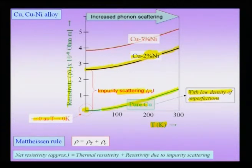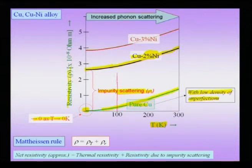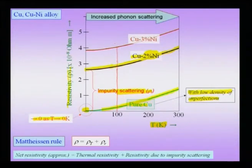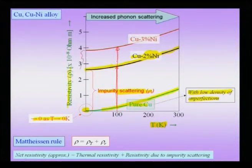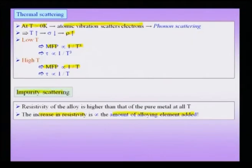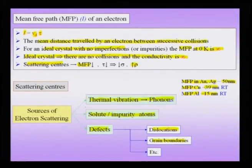With more alloying element, you have higher and higher residual resistivity as you tend towards 0 Kelvin. To make a perfect conductor, we must avoid all scattering entities — presence of solute elements and presence of defects — and reduce phononic scattering contribution by reducing the temperature, which increases conductivity.